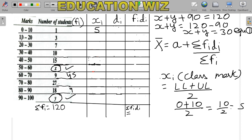For the second class interval: (10+20)/2 = 15. Similarly, (20+30)/2 = 25. Notice a pattern: there is a difference of 10 between successive class marks, because the class size is 10. So the class marks increase by 10 each time: 25, 35, 45, 55, 65, 75, 85, and 95.